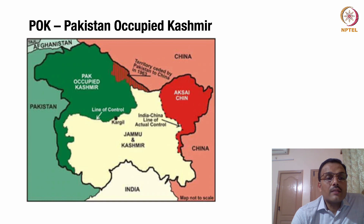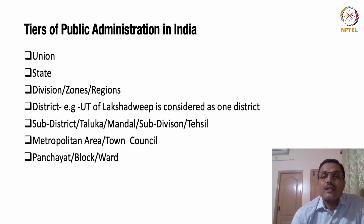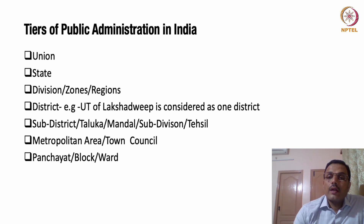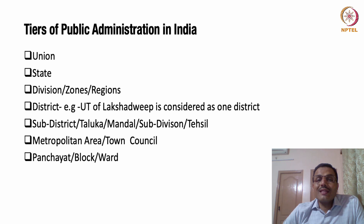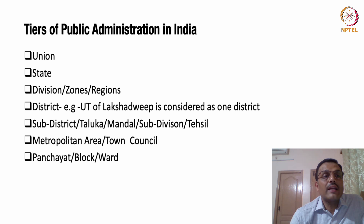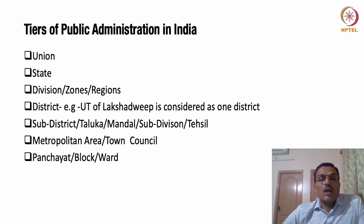Let us now look at the tiers of public administration in the territory of India. If you look at the scope and application of public administration, you will notice that first we have the union — union territory and union administration. Below it, we have the state territory and state administration. For example, we have 28 states — it could be the state of West Bengal, the state of Odisha, or any other state.